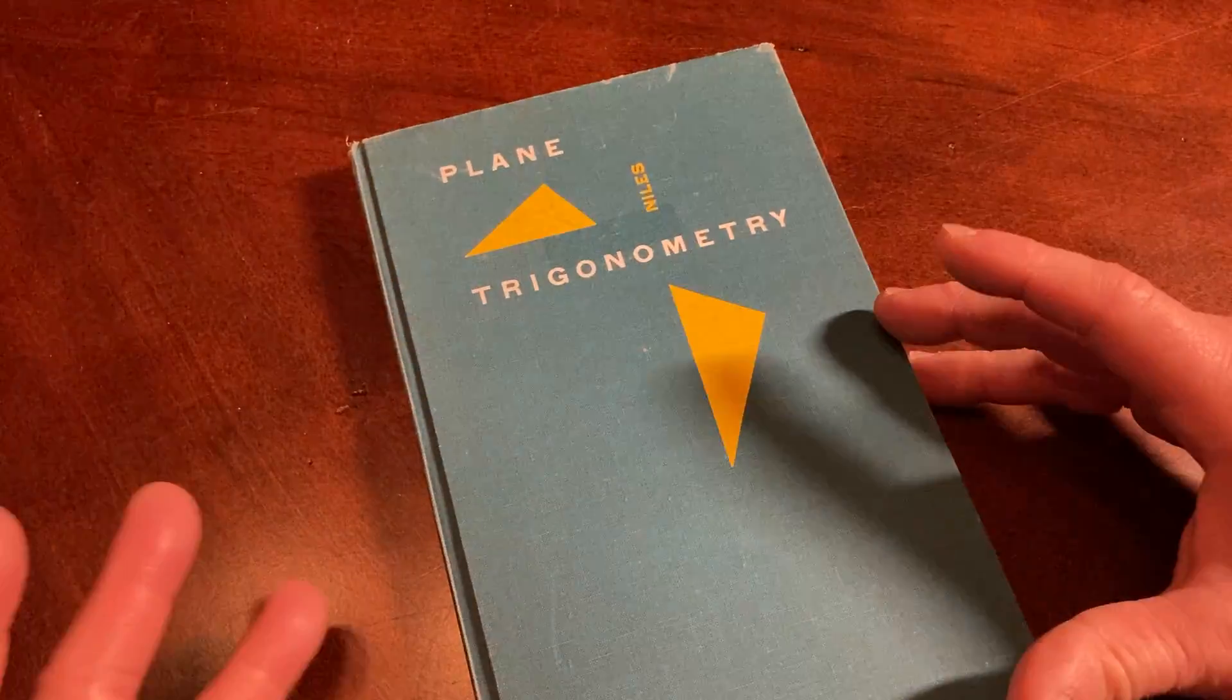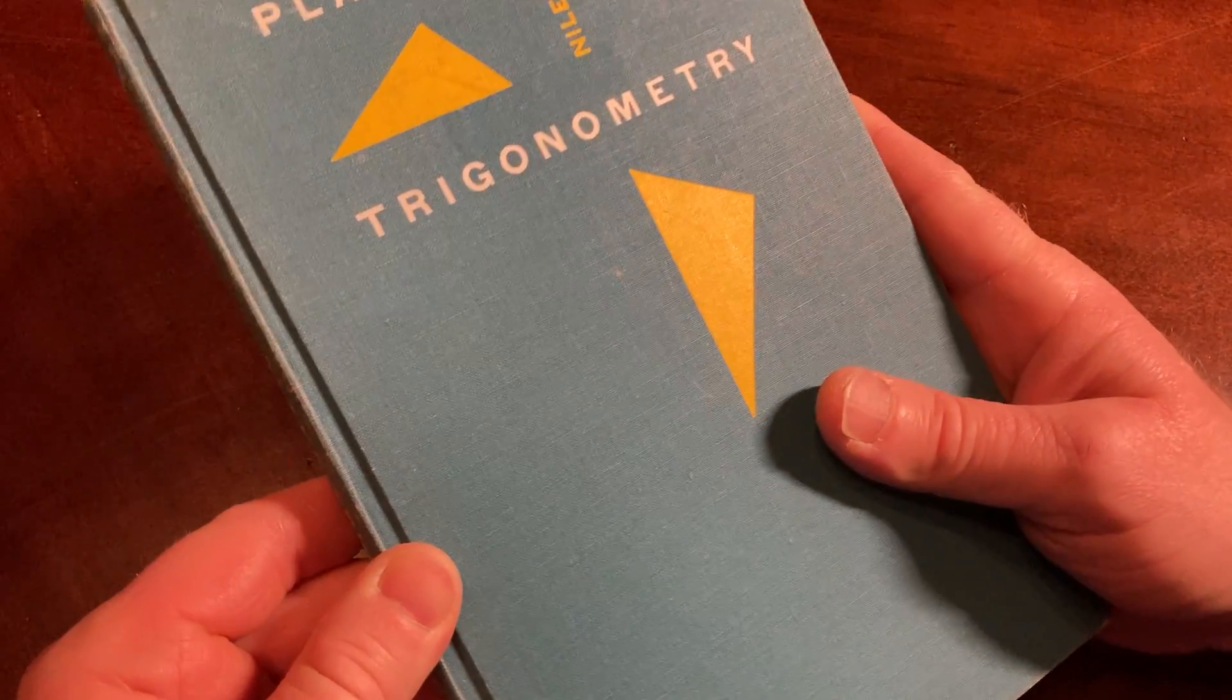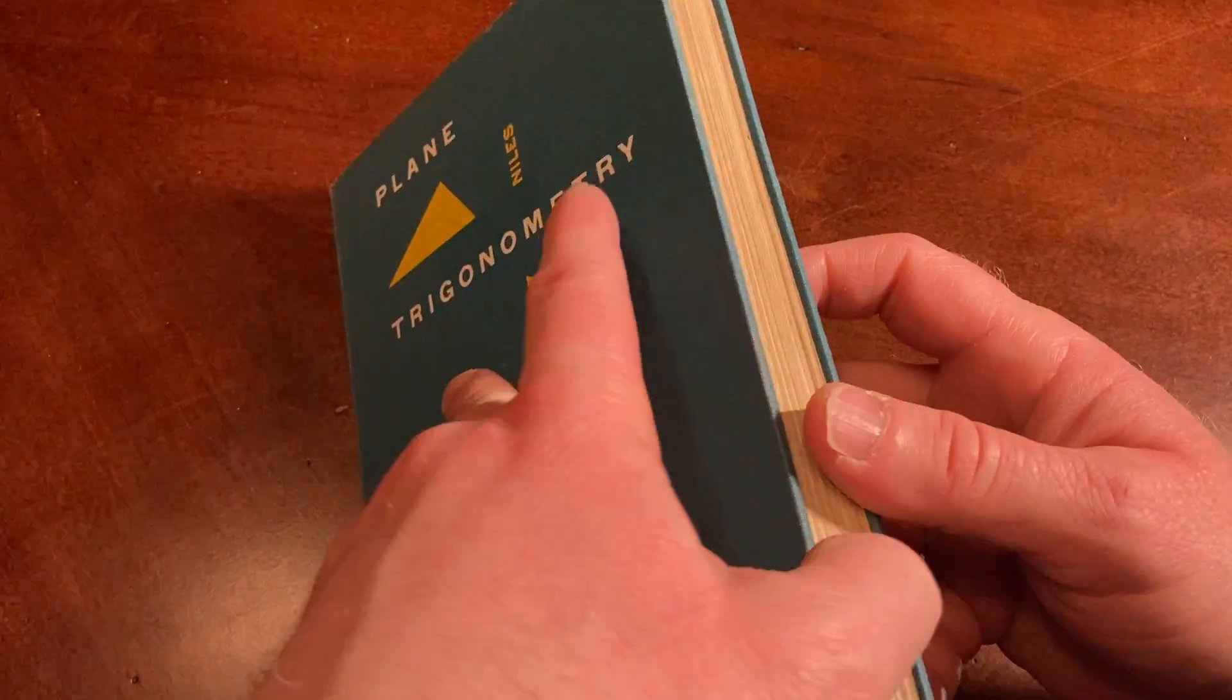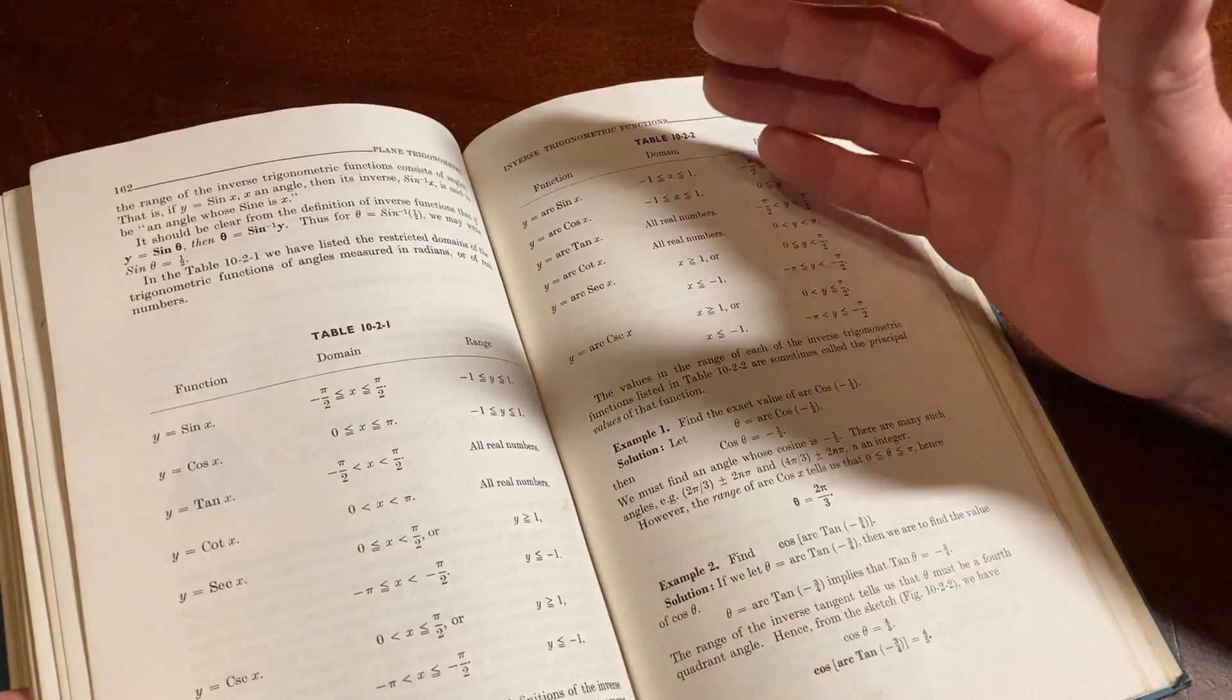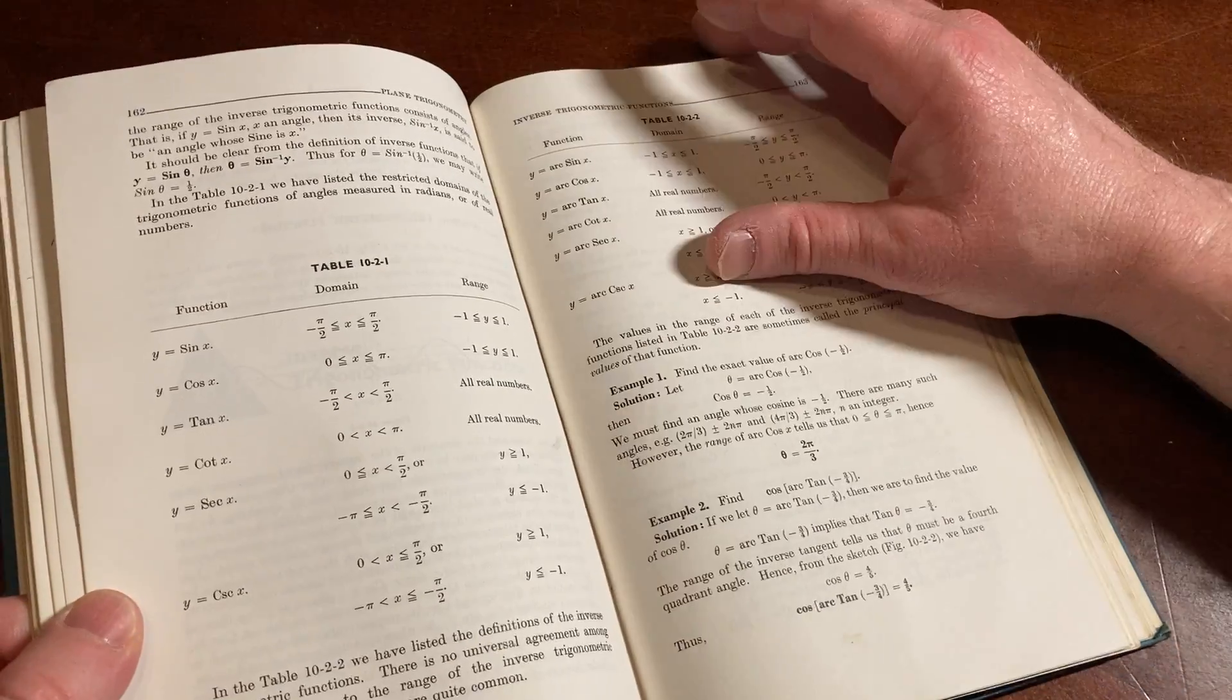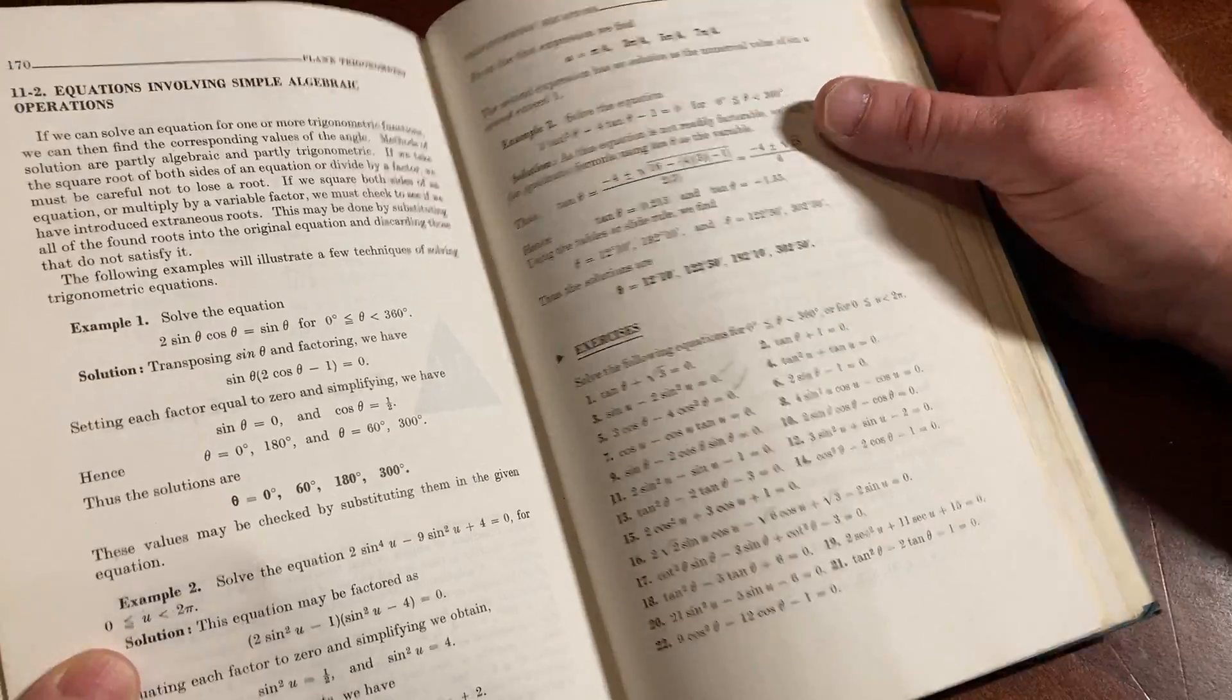You know what's really interesting about this book? It's a trig book. This is a book on trigonometry. There's a lot of books out there that are pre-calc books or algebra and trig books. But when you just get a book just on trigonometry, it's kind of interesting. Usually they're much smaller. I have other trig books. There's other trig books which are also fantastic.